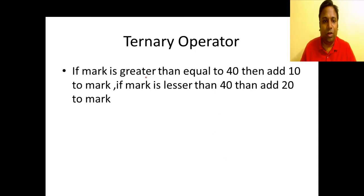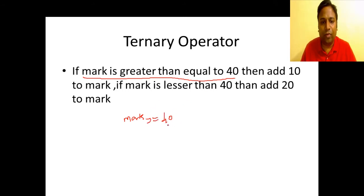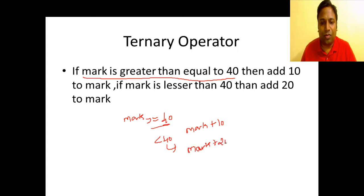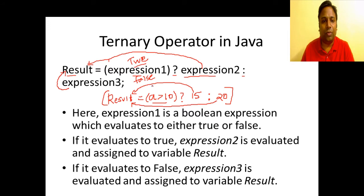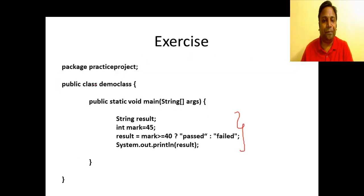Here is another exercise. We read mark — if mark is greater than or equal to 40, then we add 10 to mark, so the result is mark plus 10. If mark is not greater than or equal to 40, if it is less than 40, we add mark plus 20. The reason I have taken this example is just to explain that expression 2 and expression 3 can themselves be expressions — not just simple values.